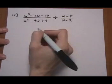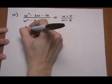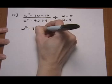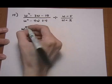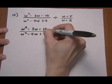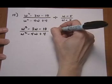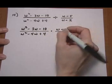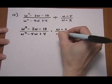First step: change it to multiply and flip the second fraction. So we have (w² - 3w - 10) over (w² - 4w + 4) times the reciprocal: (w - 2) over (w - 5).